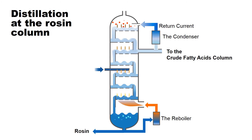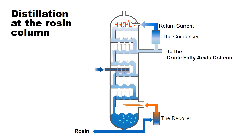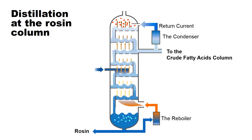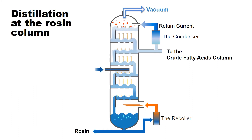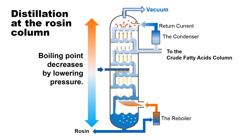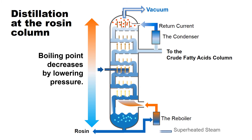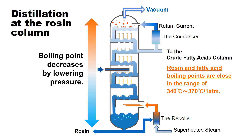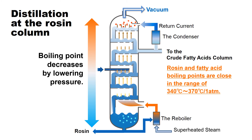In contrast to petroleum refining, rosin and fatty acids are hard to distill and separate because of their high boiling point and the fact that they readily decompose at high temperatures. In order to decrease the boiling point of rosin and fatty acids, a vacuum system is usually used to distill these components. Superheated steam is also fed into the system to decrease the boiling point. It is necessary to control the pressure and temperature precisely as rosin and fatty acids have similar boiling points.